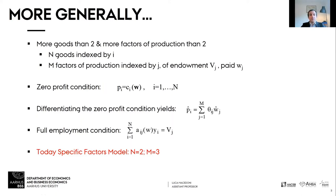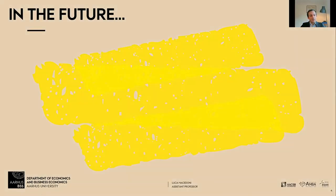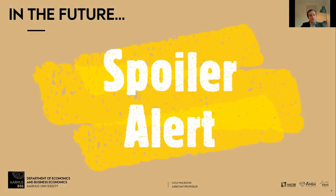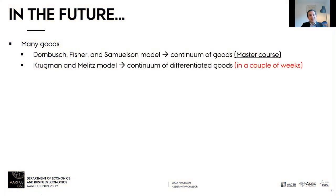Things become even more complicated with multiple factors of production and more than two goods. In the future we'll expand our basic trade model along these dimensions. There is a long literature studying international trade with many goods — a very famous Dornbusch-Fisher-Samuelson paper has a continuum of goods, which is studied in an advanced international trade master's course.